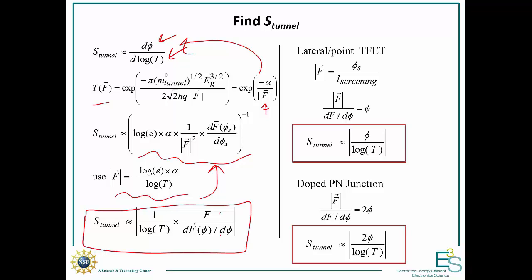We can evaluate this for several different types of junctions. For a lateral or point tunnel junction, the peak field is the potential across the barrier divided by some screening length, so the field divided by its derivative is just given by the potential. Similarly, if we had a fixed-width tunneling barrier through geometry, we'd get the same result. This gives a back-of-the-envelope expression: the steepness due to tunneling barrier thickness modulation is just the potential across the junction divided by the log of the tunneling probability. For a doped PN junction with a quadratic field distribution, evaluating this gives 2φ — so an extra factor of 2, meaning it's twice as bad.